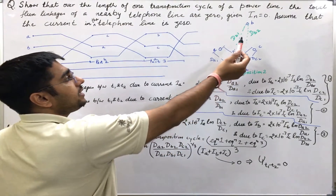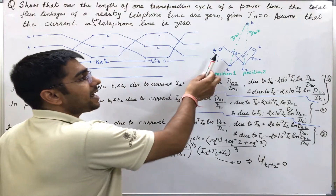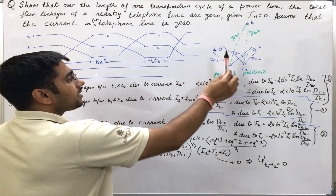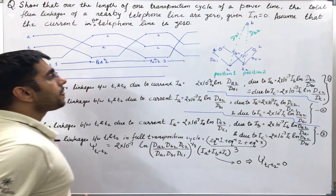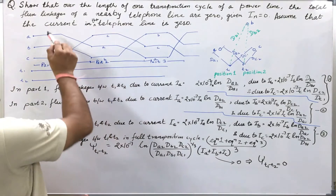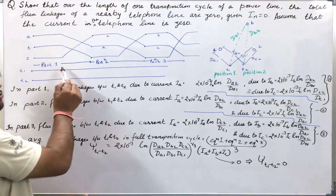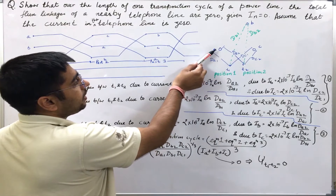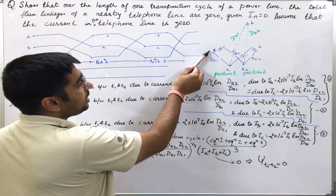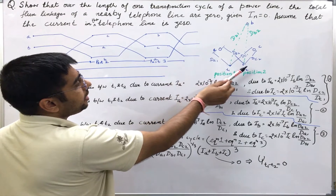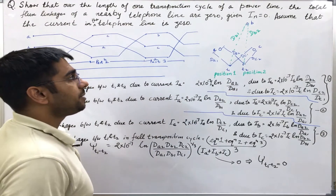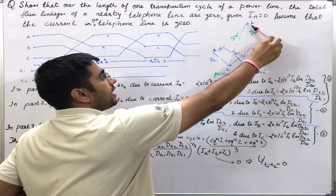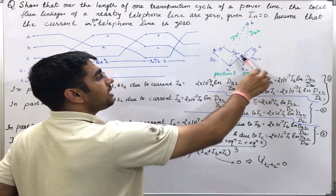In this figure I have shown the distances between the power line as well as the telephone line. This diagram refers to the positions in part 1 of the transposition cycle. In part 1, the distance between conductor A and T1 is da1, and conductor A and T2 is da2. Similarly, between conductor B and T1 it is db1, and db2. Similarly, dc1 and dc2.